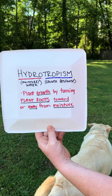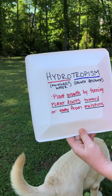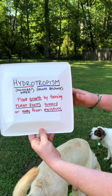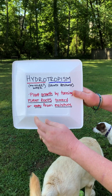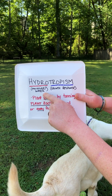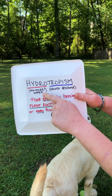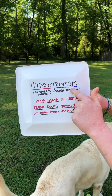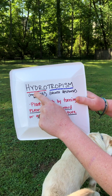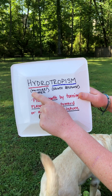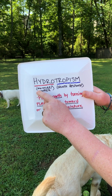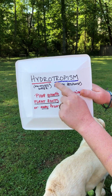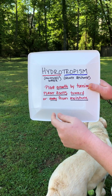So for example, maybe water, maybe sunlight, maybe gravity, whatever it might be. Today we're going to talk about moisture or water. So hydrotropism — think of a hydrant, hydro, using water.